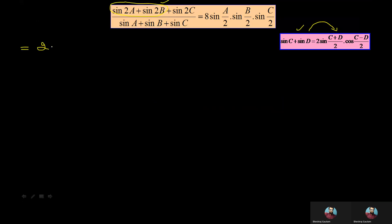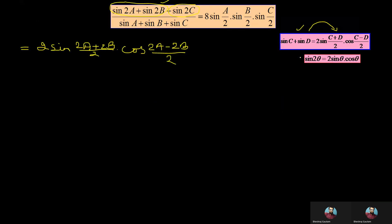So the numerator becomes 2 sin((2A+2B)/2) into cos((2A-2B)/2). The third term, sin 2C, can be expressed using the formula sin 2θ = 2 sin θ cos θ. So sin 2C can be written as 2 sin C into cos C, divided by 2.